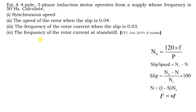The first one: find out synchronous speed. The formula is ns = 120 × f, where f is the frequency, already given as 50 Hz, divided by the number of poles which is 4. So the answer is 1500 rpm.